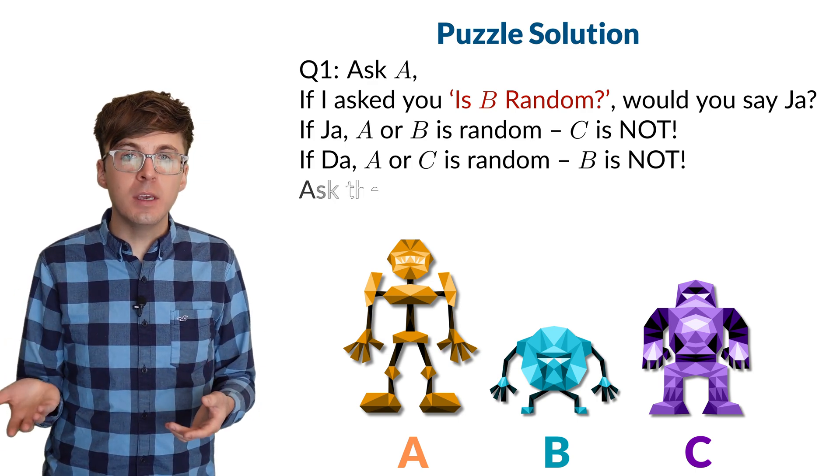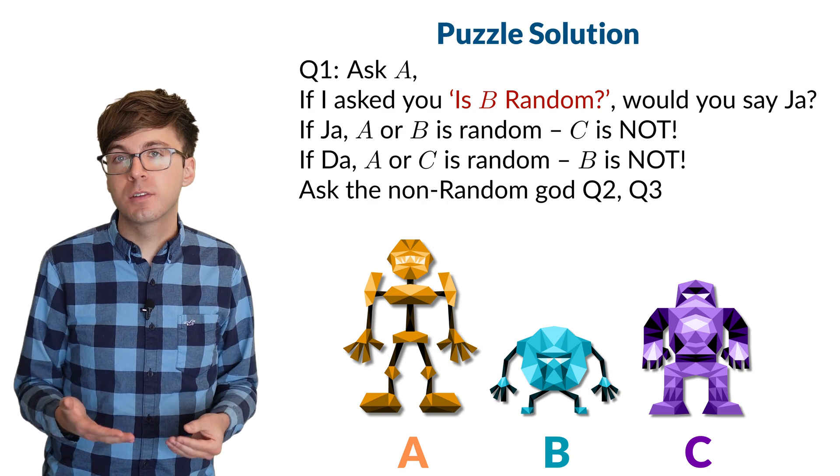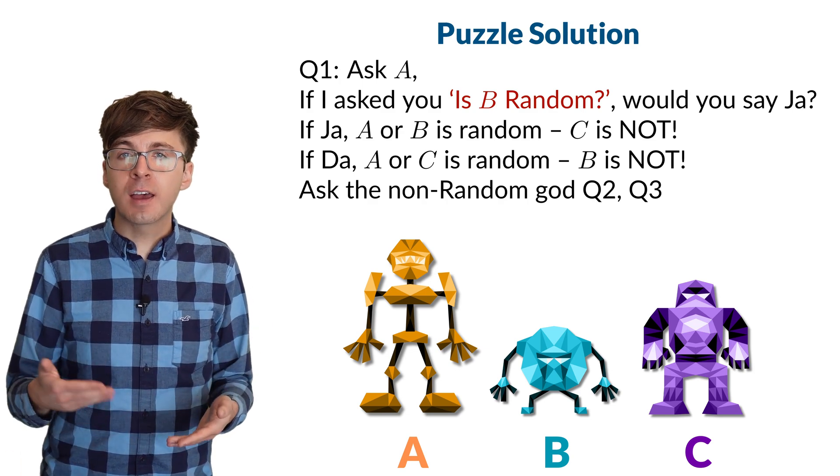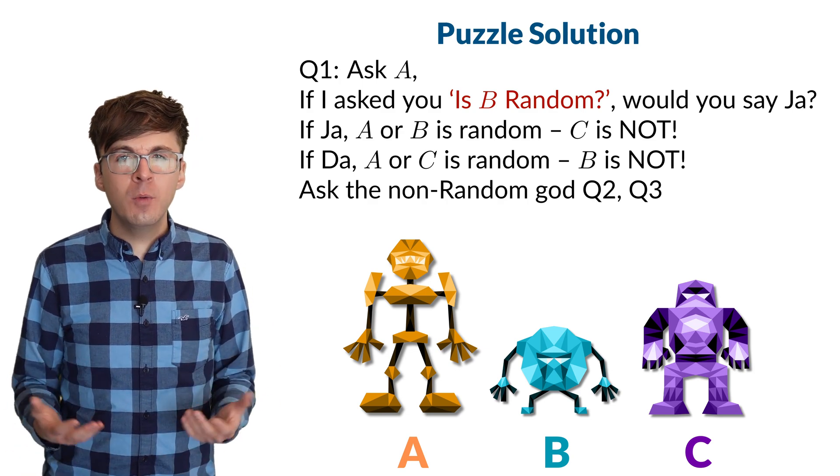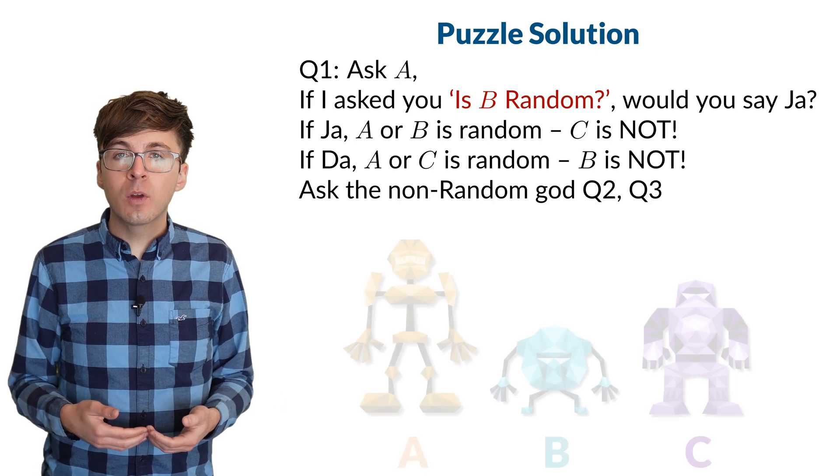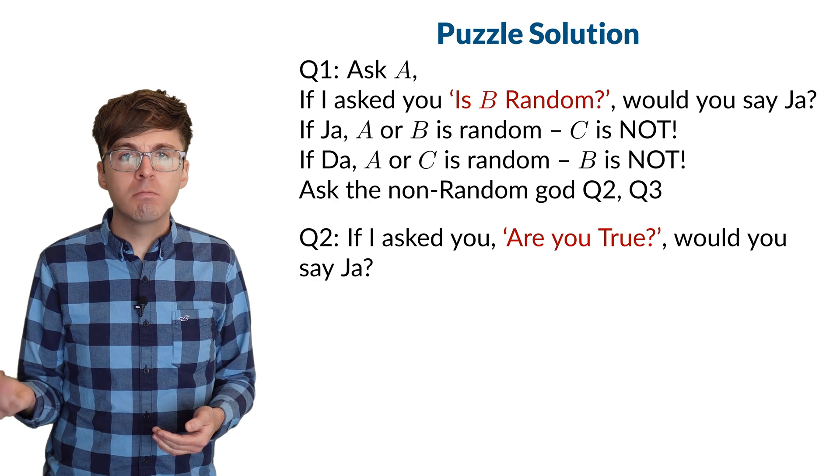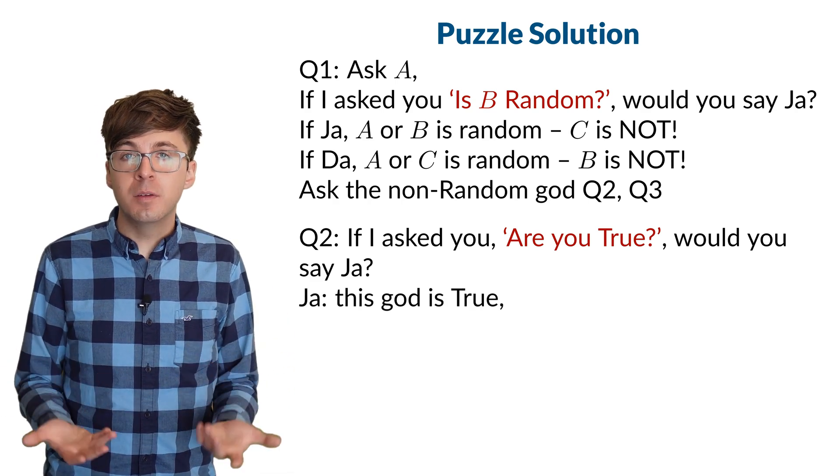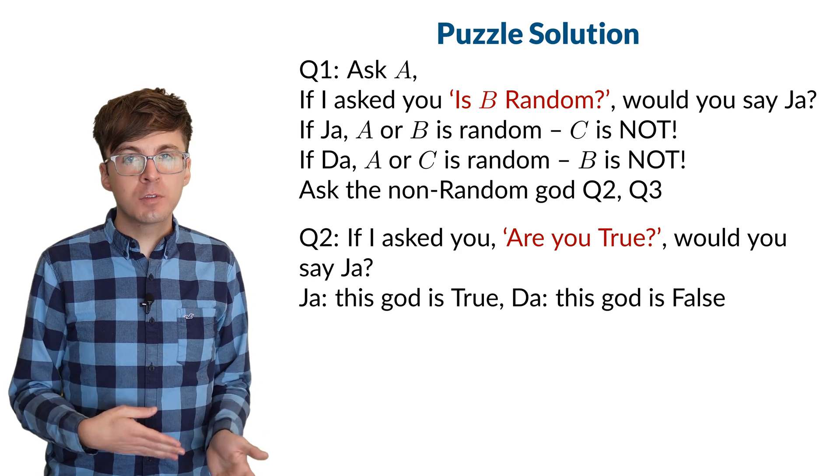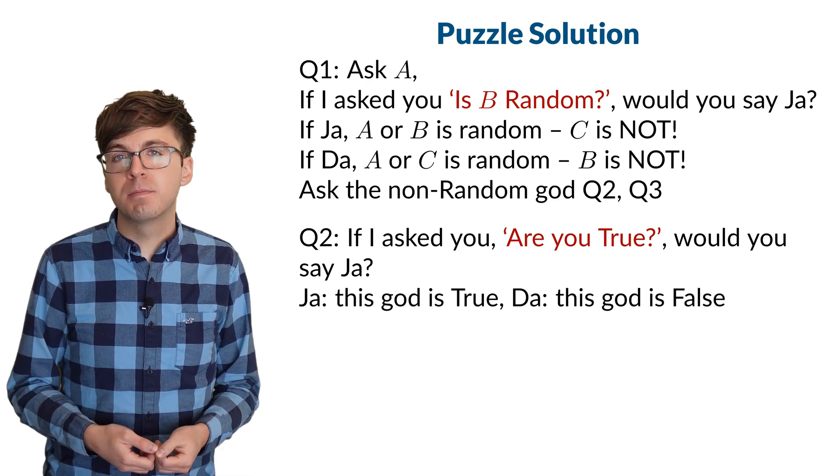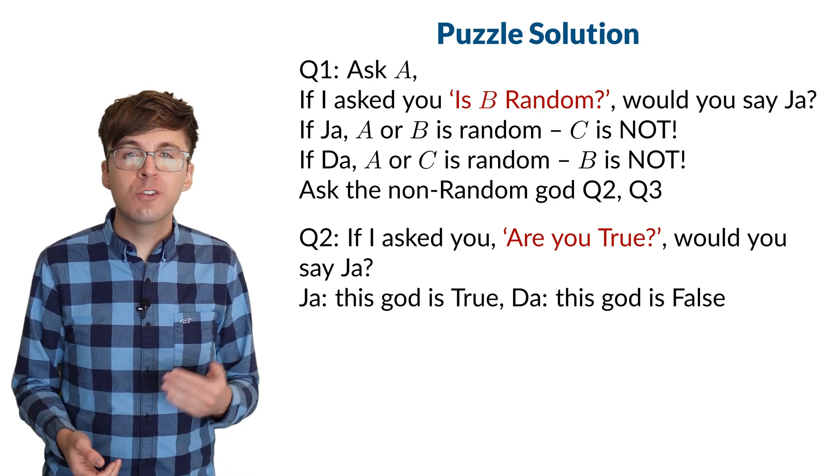Now we know one god, let's say it was B, who is definitely either true or false. Now let's ask B the last two questions. There are many ways to do this, but we could start with, if I asked you, are you true, would you say ya? If B answers ya, this confirms that B is true. And an answer of da means that B is false.